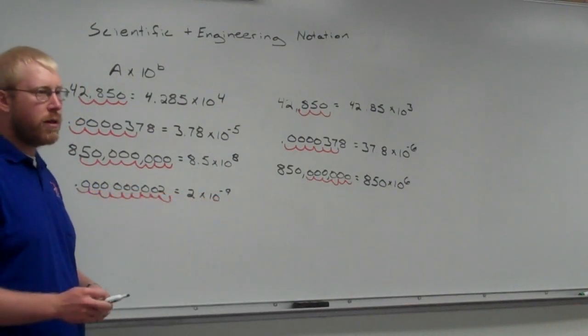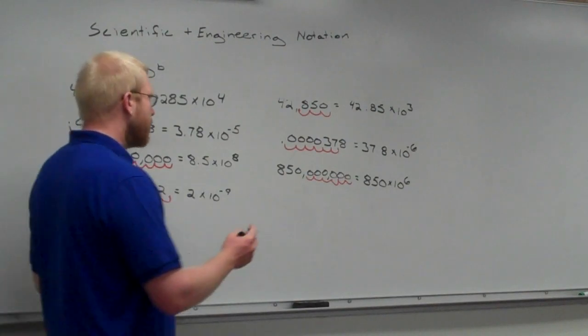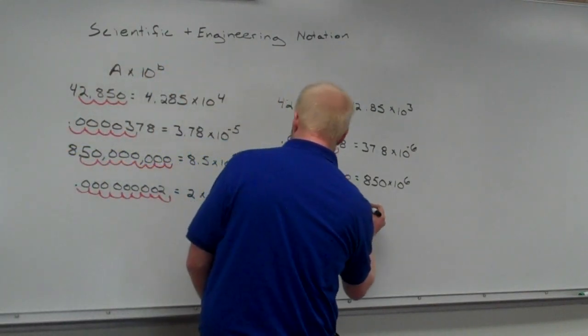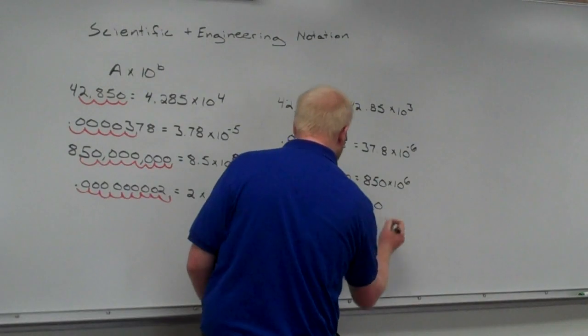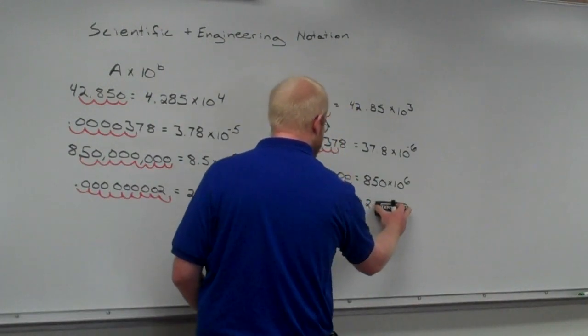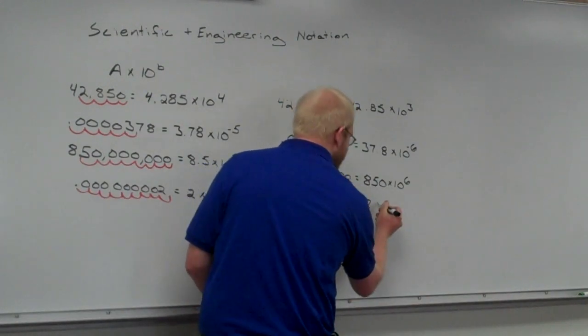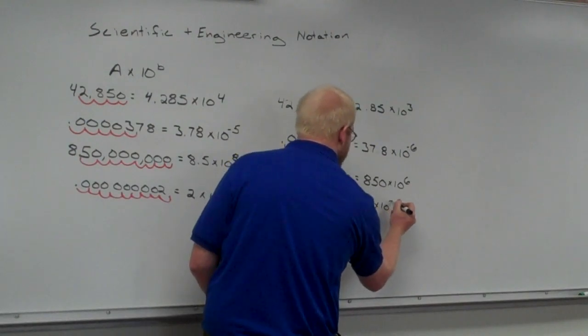Because that's already a multiple of 3. So, I don't even need to worry about all that. That's going to equal out to 2 or 2.0, whatever you want to go ahead and do. I'm going to leave it at 2. Times 10 to the negative 9.